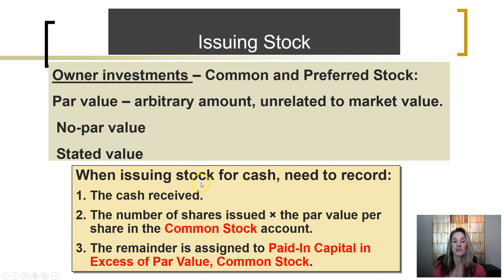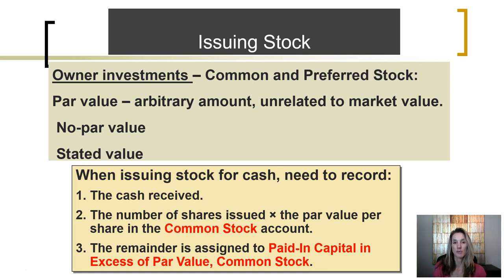When issuing stock for cash, we need to record, number one, the cash received when the stock is sold. Then we record the amount of stock that is issued at the par value in the common stock account. Any difference between the cash received and the par value or stated value of the stock is recorded in another equity account titled paid-in capital in excess of par value on common stock, or paid-in capital in excess of par value for preferred stock if we were issuing preferred stock.